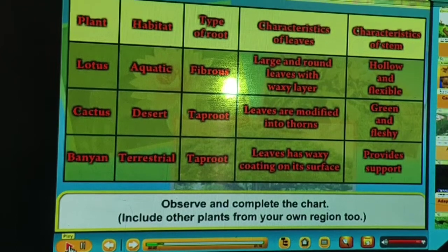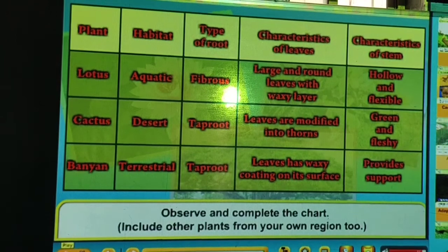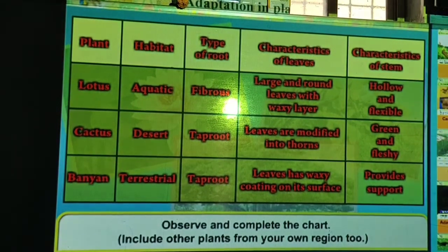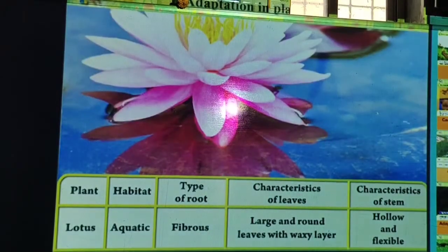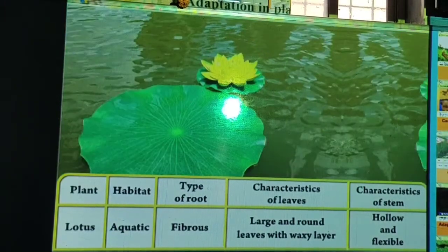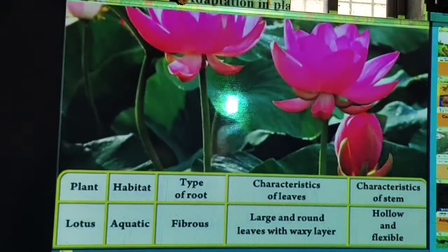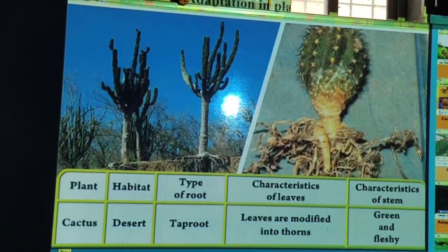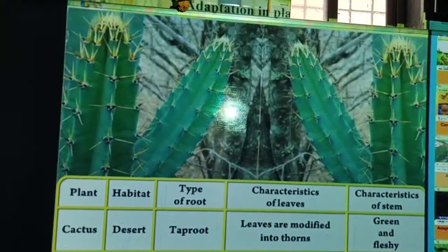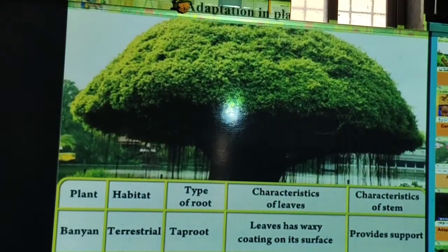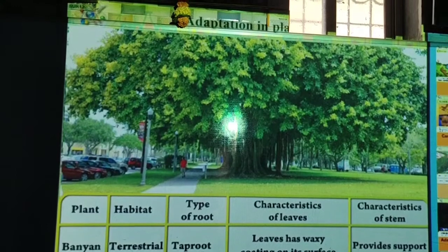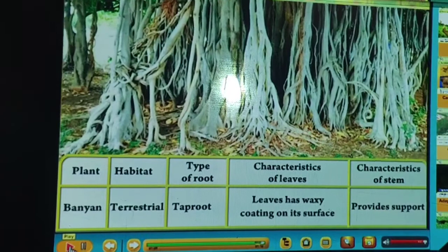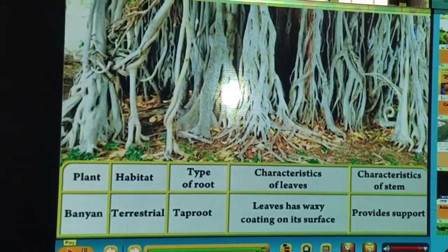Complete the chart including other plants from your own region. Different plants are found in different areas. Lotus is aquatic with fibrous roots and leaves covered with wax so they cannot decompose in water. Cactus is a desert plant with a tap root, leaves modified into thorns, and a green fleshy stem. Banyan is terrestrial with both aerial roots and tap root, found in evergreen forests.